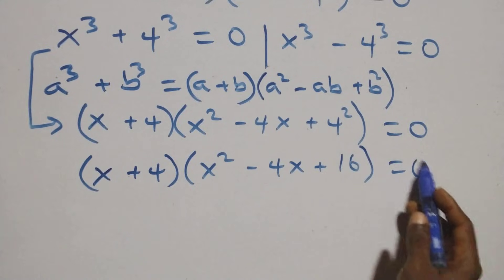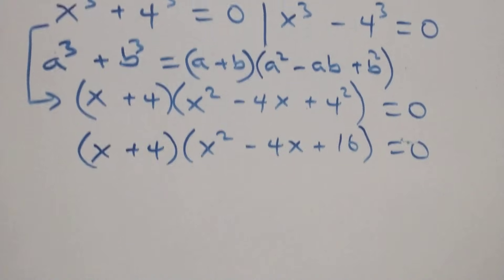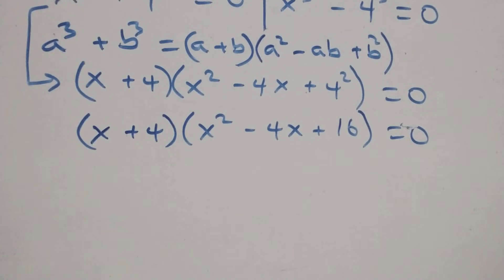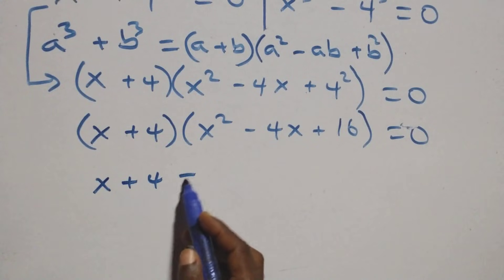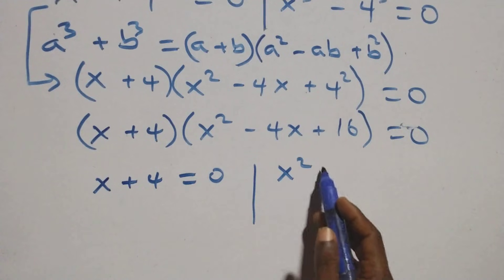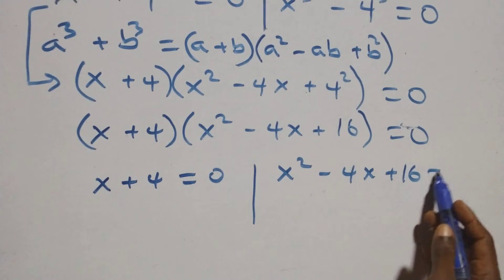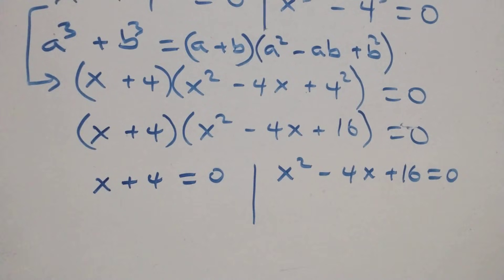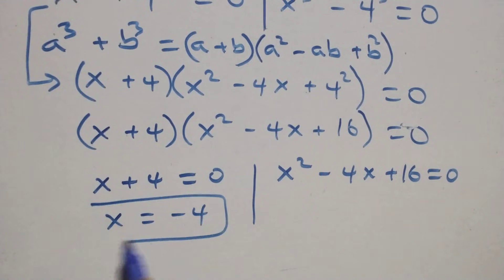From here we have two possible cases. First: x + 4 equals to 0, or x² - 4x + 16 equals to 0. Solving the first: x equals to minus 4, which is a real solution.